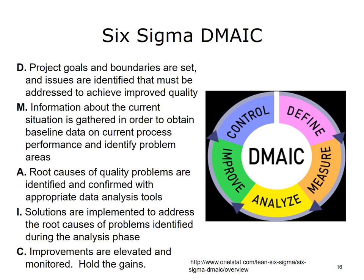Define: project goals and boundaries are set, and issues are identified that must be addressed to achieve improved quality. Measure: information about the current situation is gathered to obtain baseline data on current process performance and identify problem areas. Analyze: root causes of quality problems are identified and confirmed with appropriate data analysis tools. Improve: solutions are implemented to address root causes identified during the analysis phase. Control: improvements are evaluated and monitored — hold the gains.